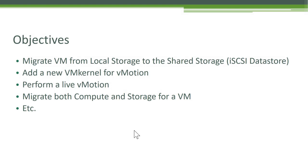First, we'll do a migration of our VM from local storage to the shared storage. If you recall, in some of the previous labs, we had configured iSCSI and created some shared storage. So now we will migrate one of our VMs which is sitting on the local storage to the shared storage. Then we'll add a new VM kernel port group for vMotion. During the iSCSI lab, we had added a dedicated VM kernel for IP storage. We'll repeat the same process, but this time it will be for vMotion.